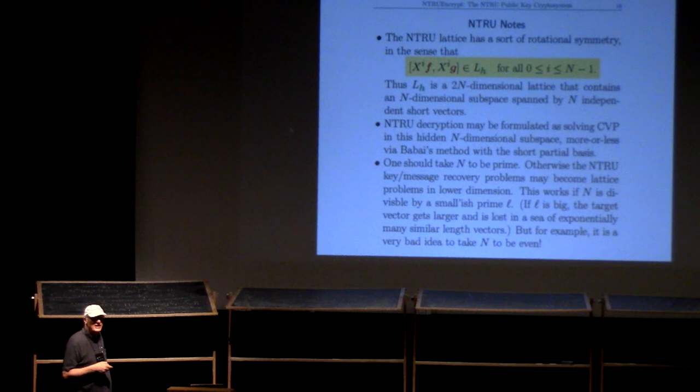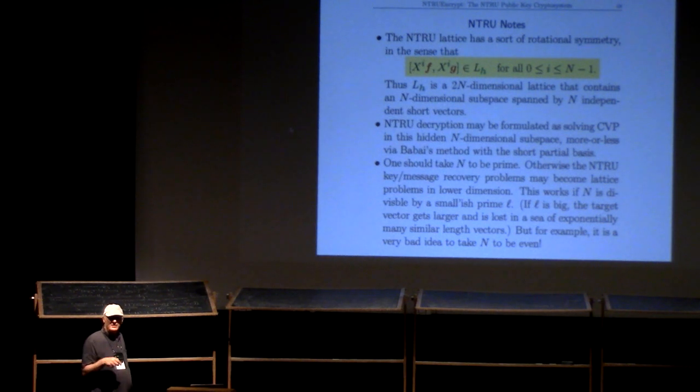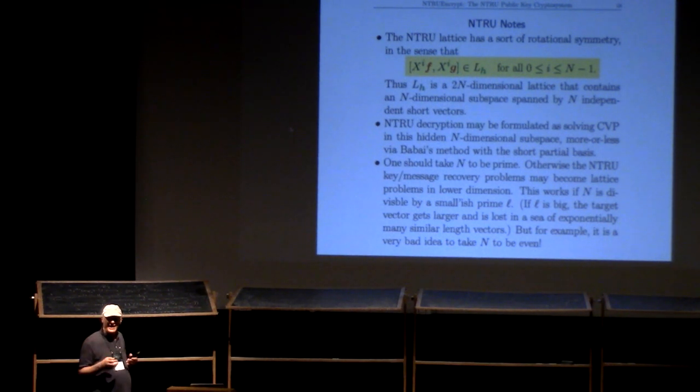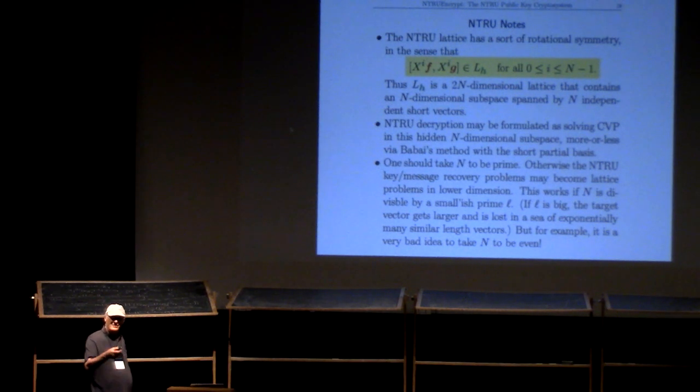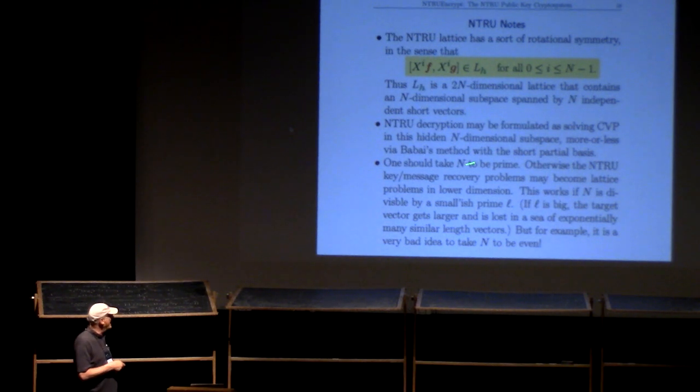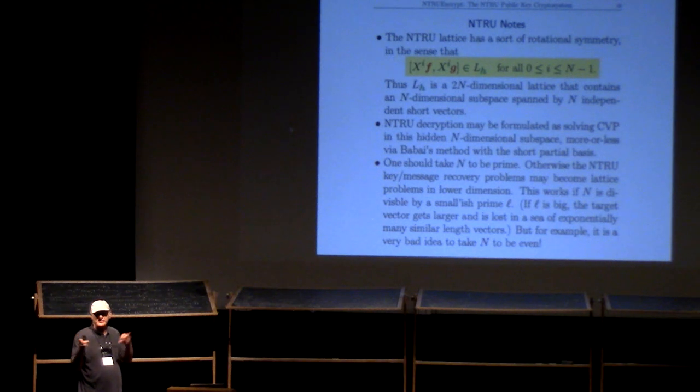A fun exercise is to show that using the private key—the little f that Alice knows and the little g—you can phrase decryption as solving a CVP problem in this n-dimensional subspace. The decryption method is pretty much Babai's method but translated over using ring multiplication. You should always take n to be prime.